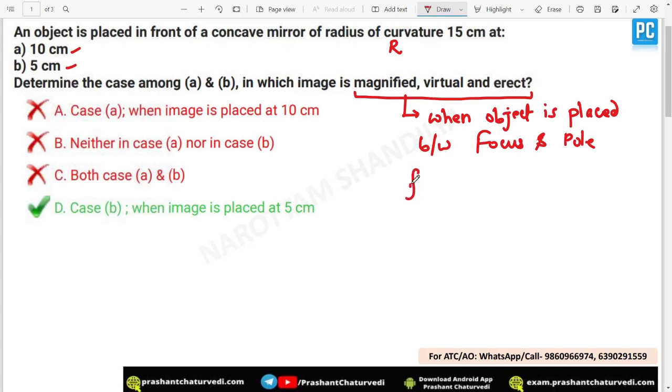What will be the focus distance? Focus distance will be 15 centimeter divided by 2, that is 7.5 centimeter. That means the object should be between 0 to 7.5 centimeter. This is the criteria.